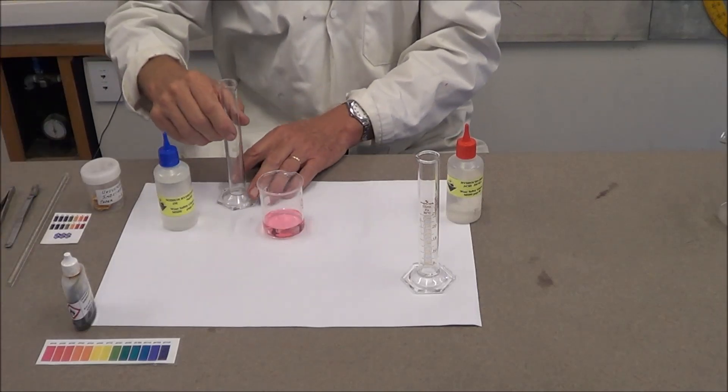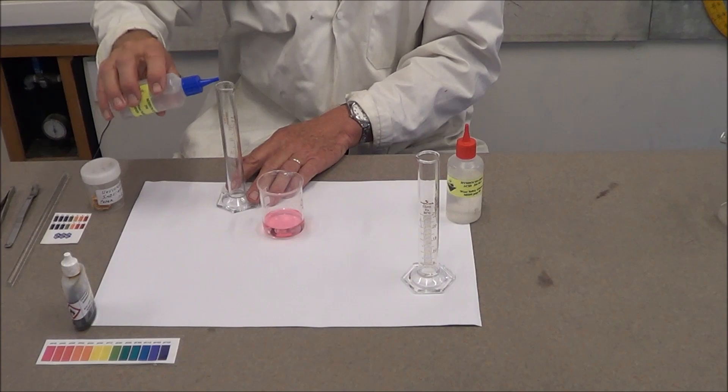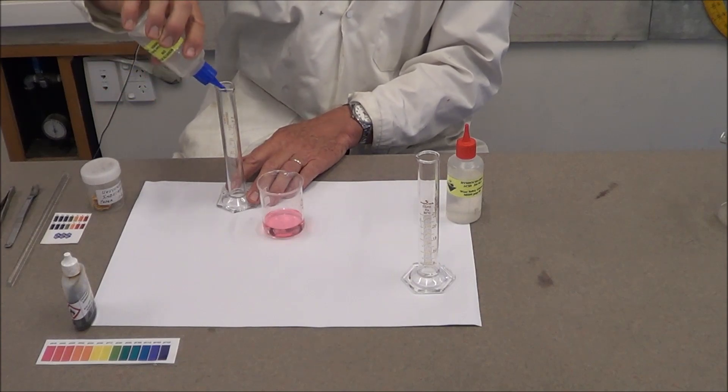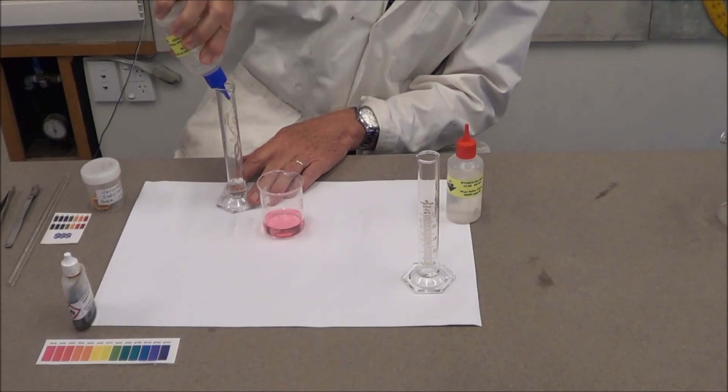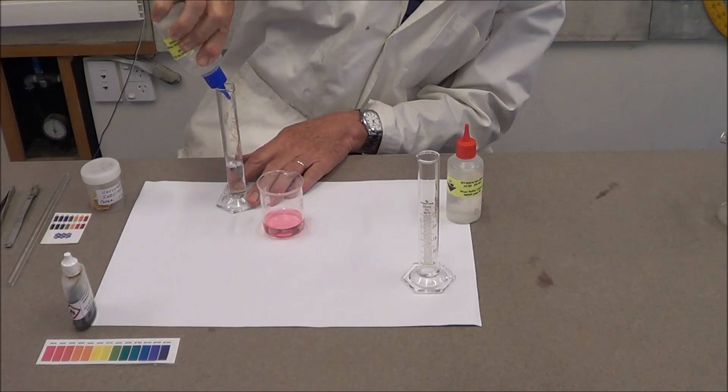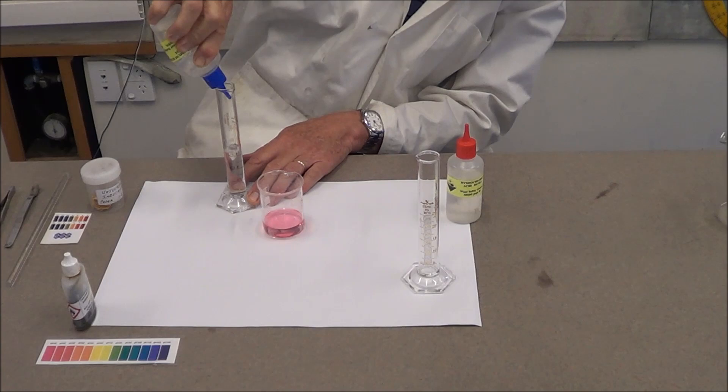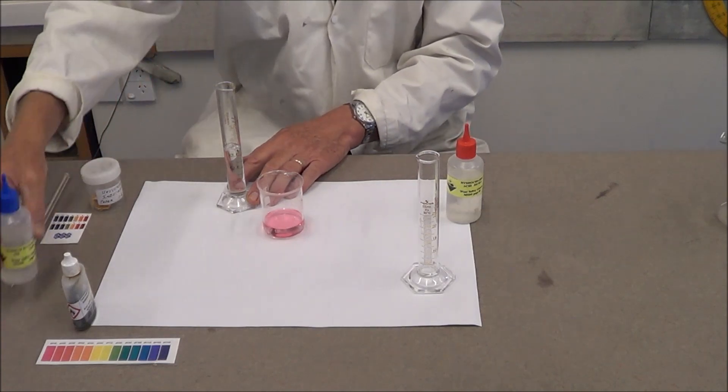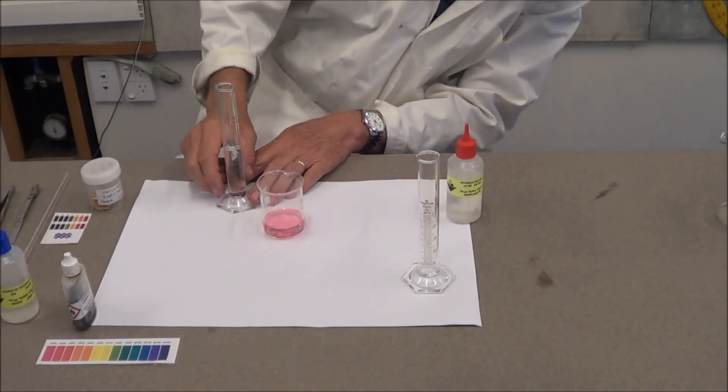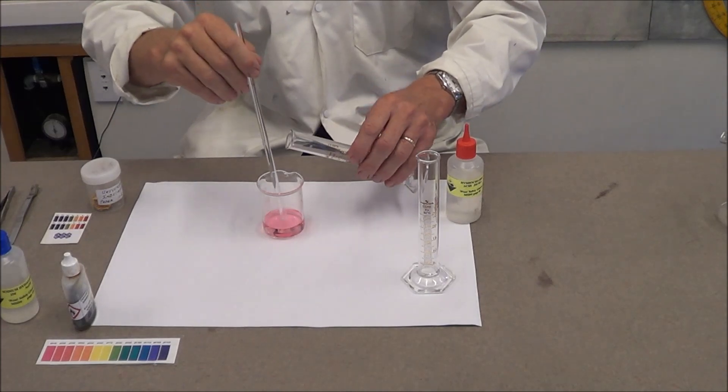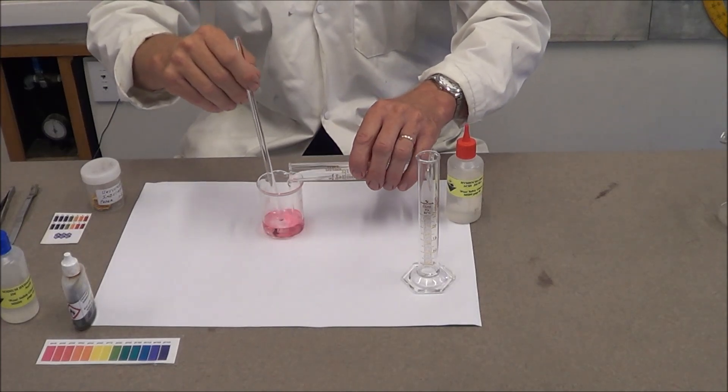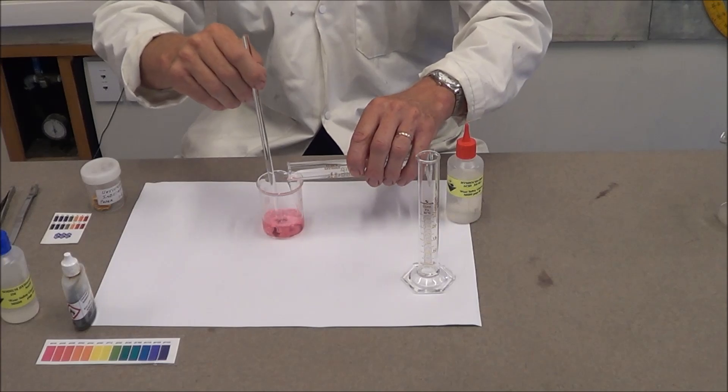We start our neutralization by adding most of the required sodium hydroxide. So I'm going to add 18 mL, ensuring that the meniscus sits on the 18 mL line at eye level. Add the sodium hydroxide gradually and note any color changes that occur.